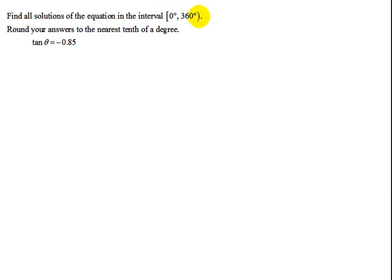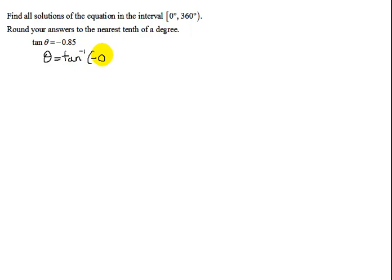In this problem we need to find all solutions in the interval 0 degrees to 360 degrees, so I know I have to be in degrees. It also says round to the nearest tenth, which most probably means I'm going to have to use my calculator. Looking at my equation, the tangent of theta is negative 0.85. Is this value on the unit circle? No, so I'm going to have to use my calculator and use the inverse tangent function on the calculator of negative 0.85.